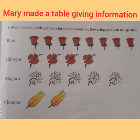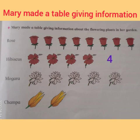Mary made a table giving information about the flowering plants in her garden. For rose: 1, 2, 3, 4, 5, 6, 7, 8 — Mary has 8 rose plants. For hibiscus: 1, 2, 3, 4 — Mary has 4 hibiscus plants. For mogra: 1, 2, 3, 4, 5 — Mary has 5 mogra plants. For champa: 1, 2 — Mary has only 2 champa plants.